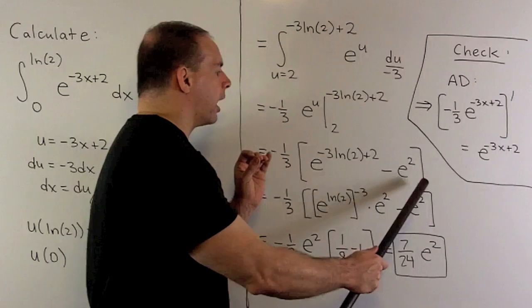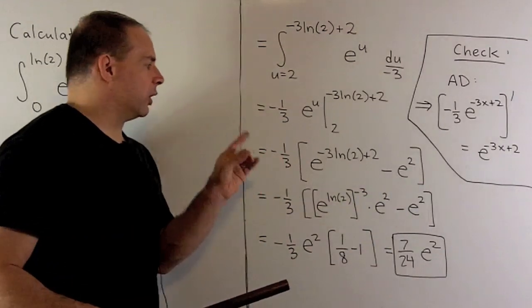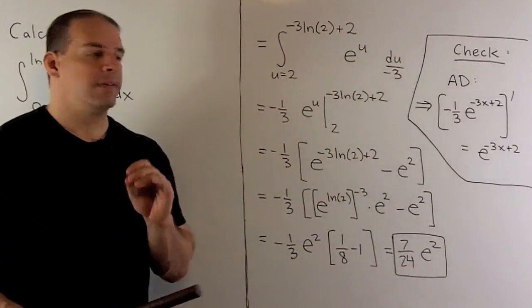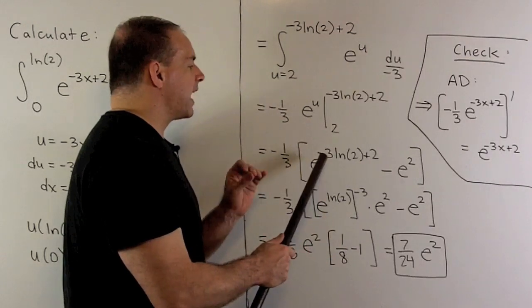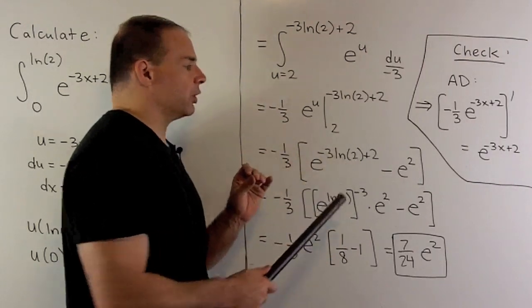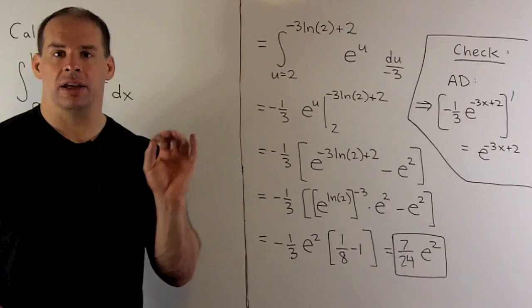So we set that up. Let's see what we can do with this. First off, I want to break up this exponent. So I can write that as e to the minus 3 natural log of 2 times e squared.